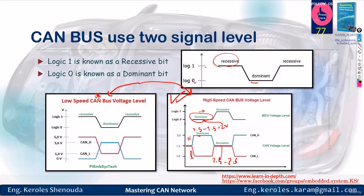Once upon a time, the low-speed CAN bus was primarily used. However, over time the transition to the high-speed CAN bus took place, which is what most people work with nowadays — practically no one uses the low-speed version anymore. In this context, a logic zero is termed dominant, while a logic one is called recessive.